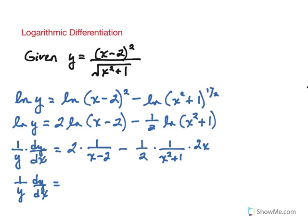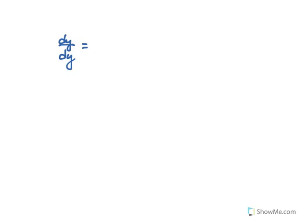We can start simplifying on the right side. Notice that the 2's cancel out, so we can condense this a little bit. For the final step, we're solving for dy/dx, so we multiply both sides by y to isolate dy/dx on the left. That gives us dy/dx equals y times the quantity 2 over x minus 2, minus x over x squared plus 1.